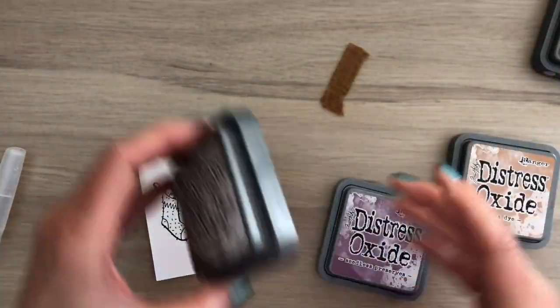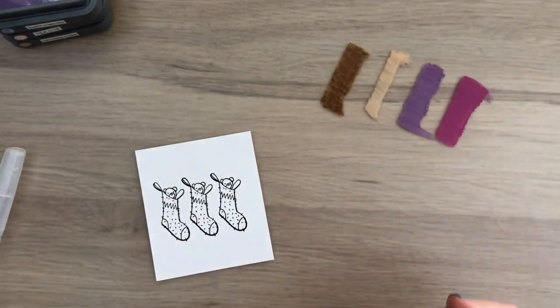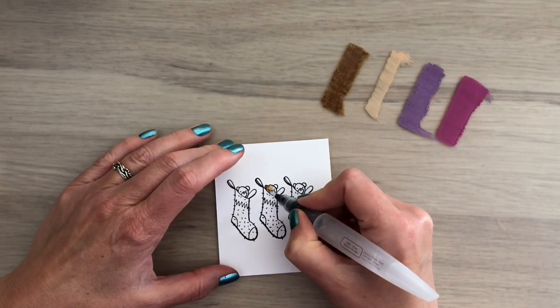I color the socks with Distress Oxide ink, which makes a great watercolor paint too. I use a fine aqua brush for the small image and I just color with the tip.